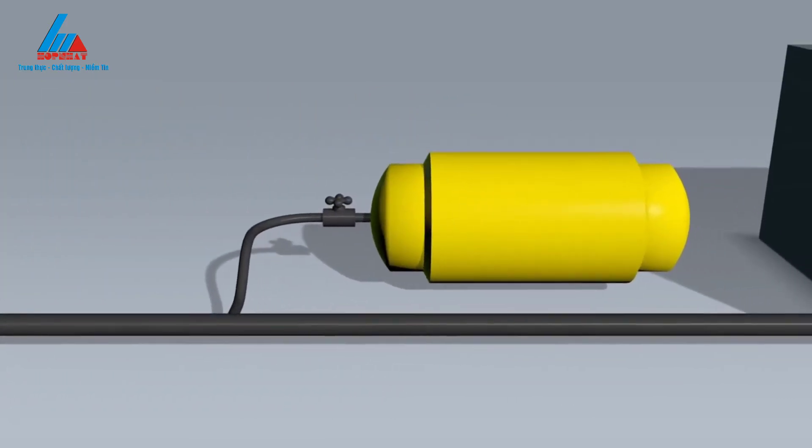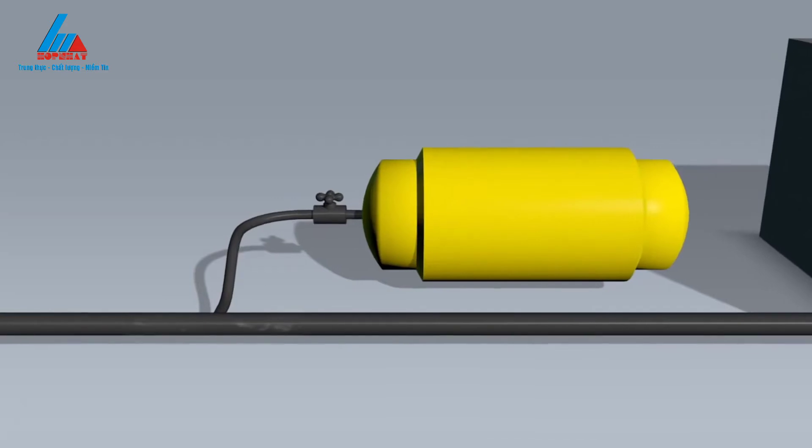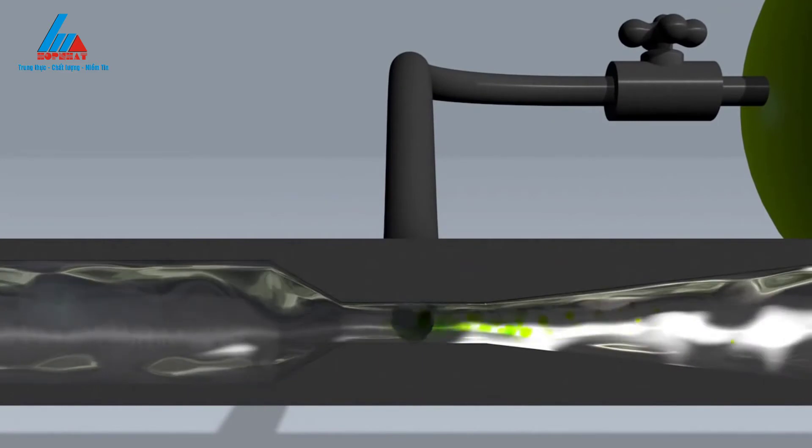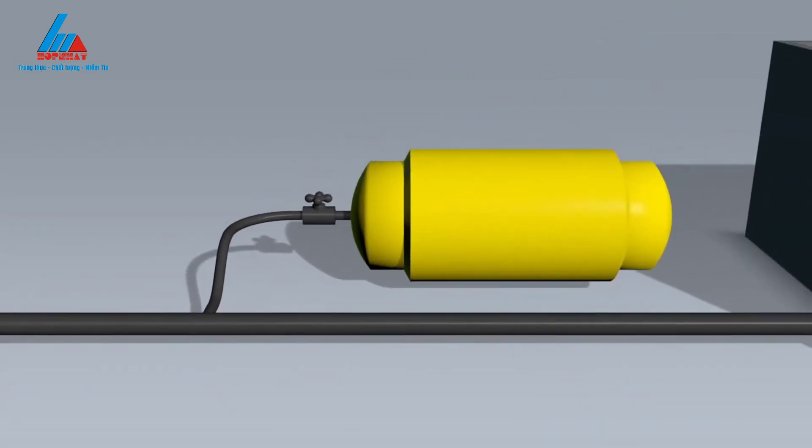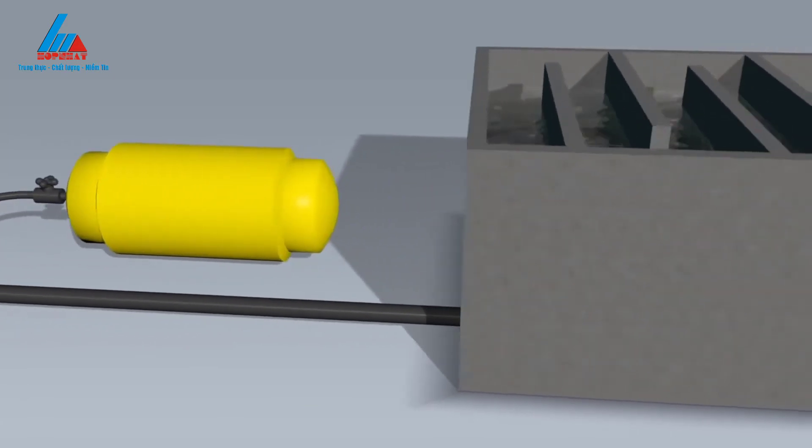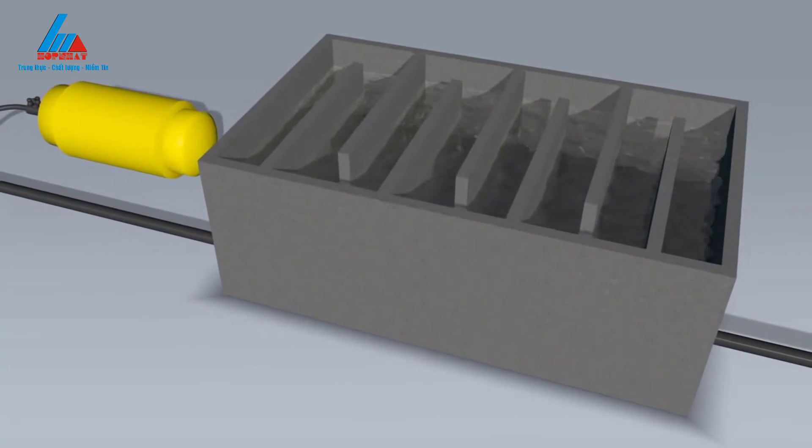The water must now go through the disinfection stage to eliminate hazardous microorganisms. Several processes can be used for this, but the most common is chlorination. Chlorine gas is dispersed into the water, forming hypochlorous acid to destroy dangerous bacteria and viruses. The chlorine is then left in contact with the water for a while to allow for thorough disinfection.